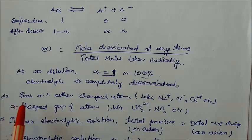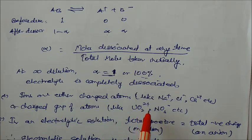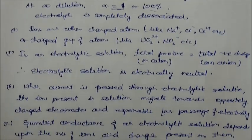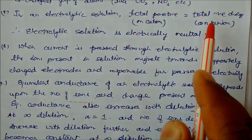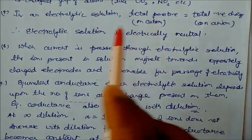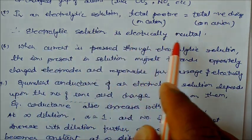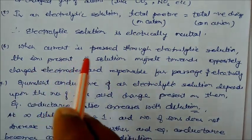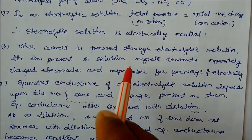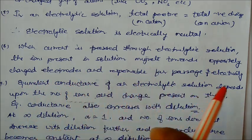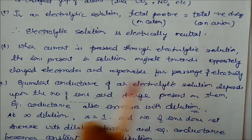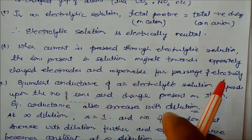Another postulate: ions are either charged atoms — such as Na⁺ — or charged groups of atoms — such as UO₂⁺ or NO₃⁻. In electrolytic solutions, the total positive charge on cations equals the total negative charge on anions, which is why electrolytic solutions are electrically neutral in nature.